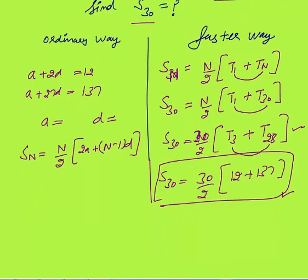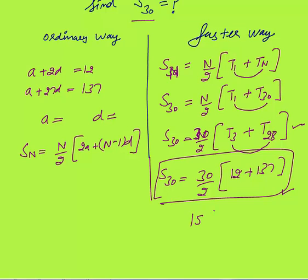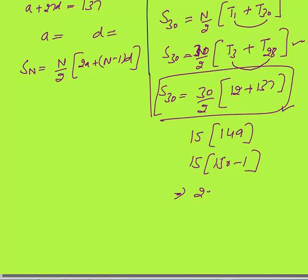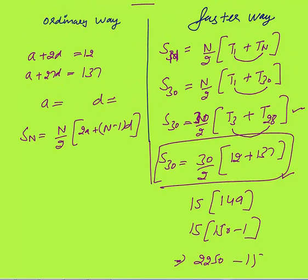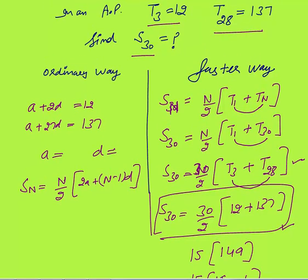In this way you can calculate the question in 30 to 40 seconds. You know that for sum of 30 terms, you need the third term from the beginning and third term from the end — t3 plus t28. You know both terms, add them, multiply by 15, and you get your answer. That's how you solve questions in exams in the least possible time using simple logic.